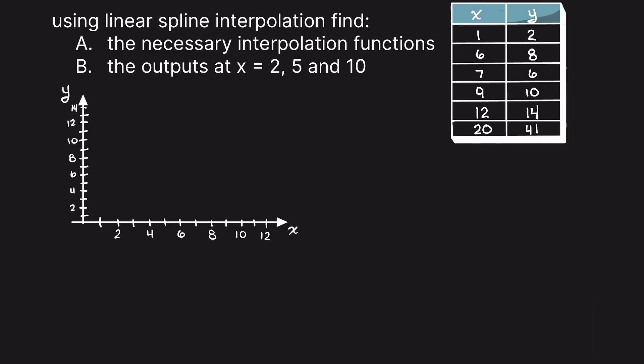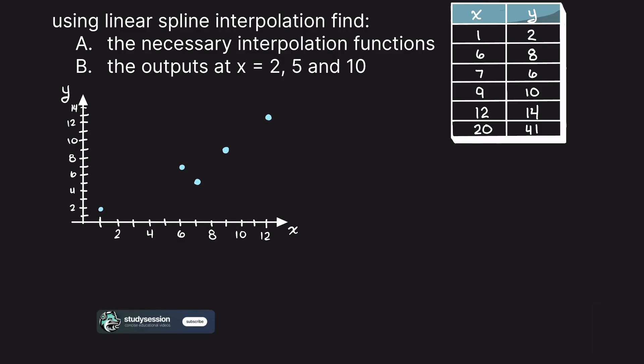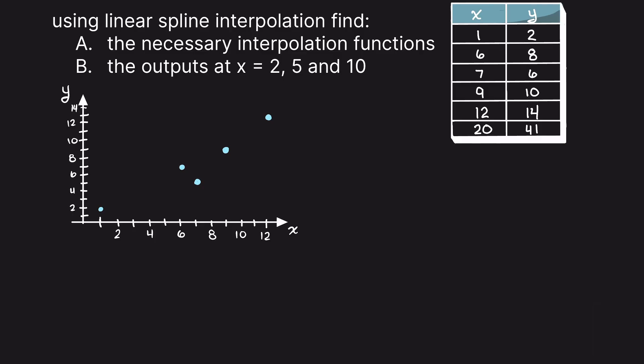Let's first begin by plotting our points of interest around the areas in which we need to interpolate. In this example, we do not need to plot the 20 data point as we already have one data point to the right of our largest point that we will be interpolating for, that is our 12 data point. We can see by this graph here that we need two interpolating polynomial functions and our data point at 7 is actually unnecessary.